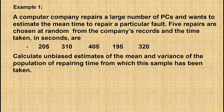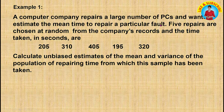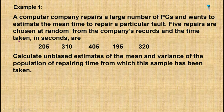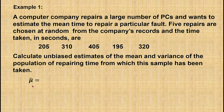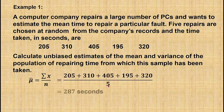Now it's time to try some examples. A computer company repairs a large number of PCs and wants to estimate the mean time to repair a particular fault. Five repairs are chosen at random from the company's records. Calculate unbiased estimates of the mean and variance of the population of repairing time. First, I'm going to find the unbiased estimate of the population mean, mu hat, which is the sum of the observations divided by the sample size. When calculated, that is 287 seconds.